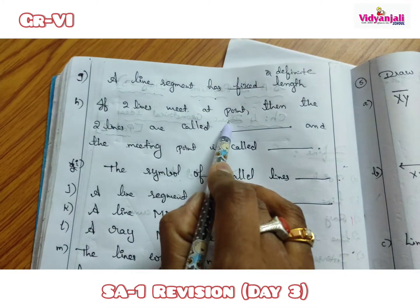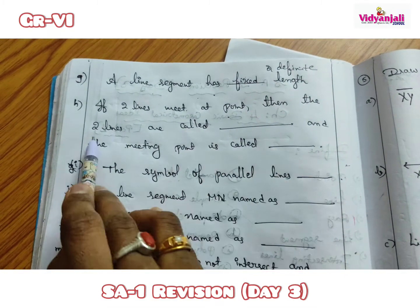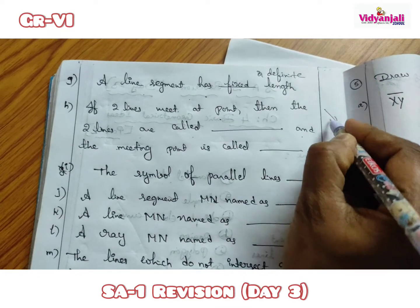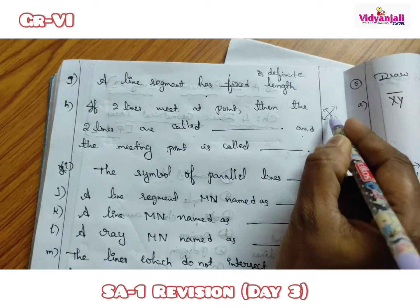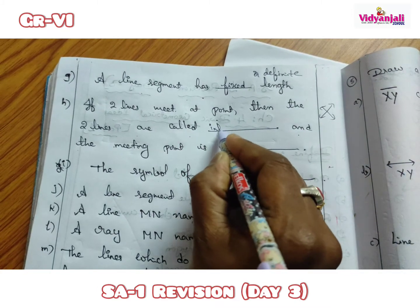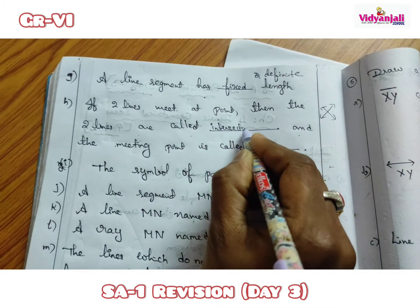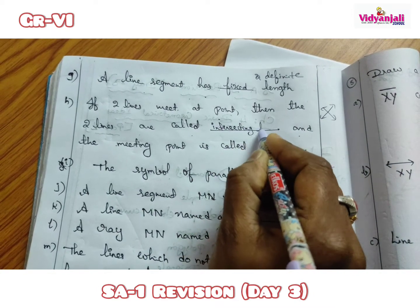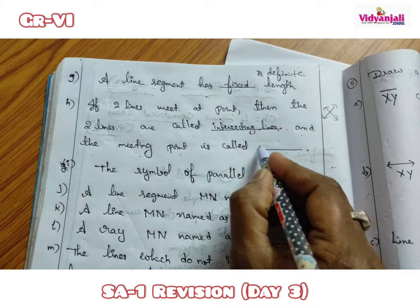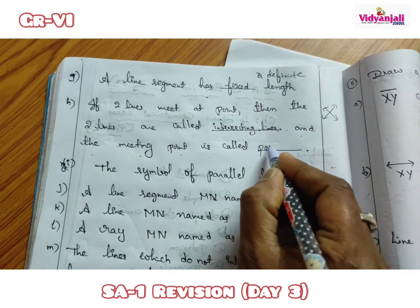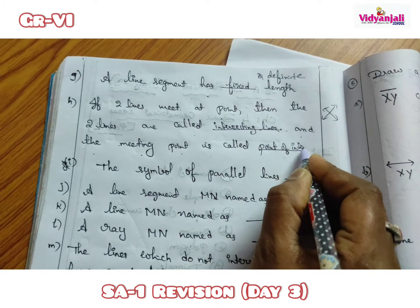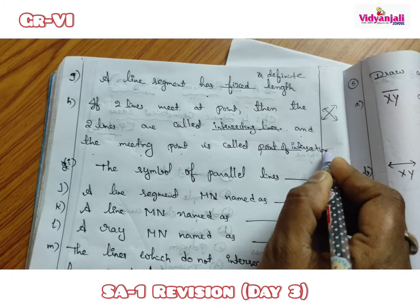When two lines meet at a point, they are called intersecting lines. The meeting point is called the point of intersection.